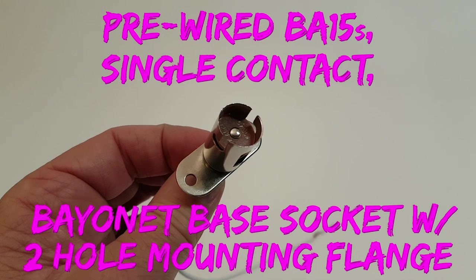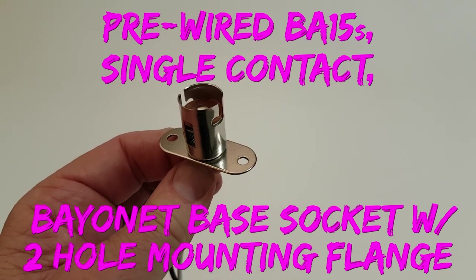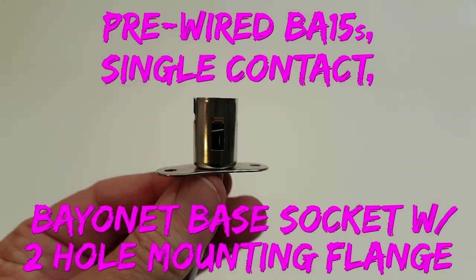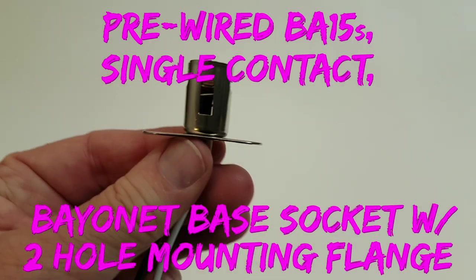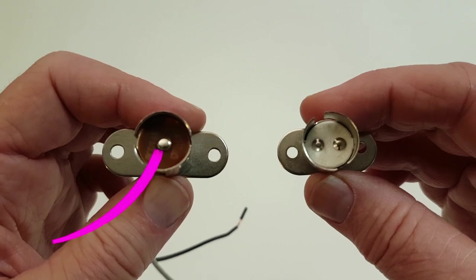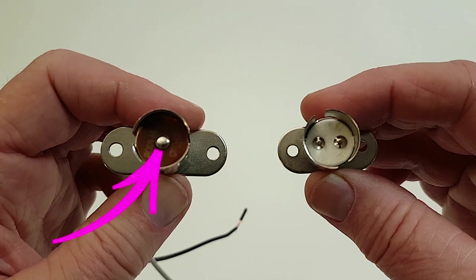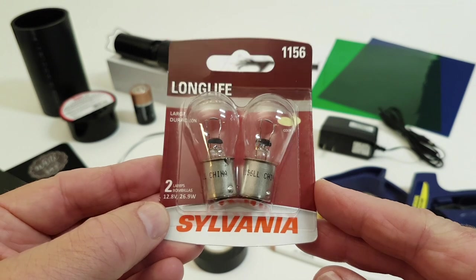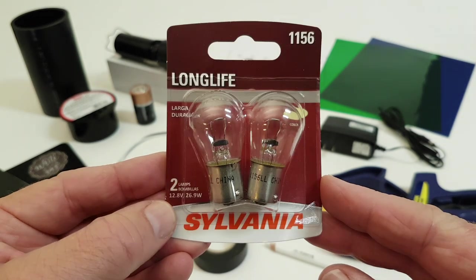One pre-wired single contact bayonet base socket with a two-hole mounting flange. Keep in mind that the single contact point socket is for a single filament bulb. The double contact point socket is for a two-filament bulb. You do not want to use that one. One low voltage, clear glass, single filament, auto parts replacement bulb.